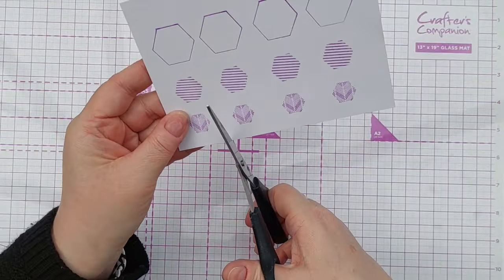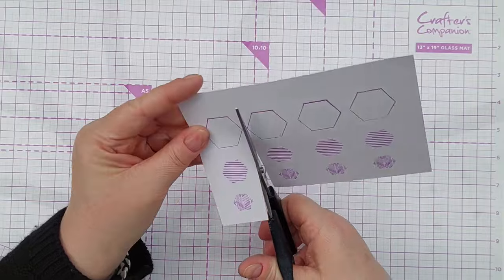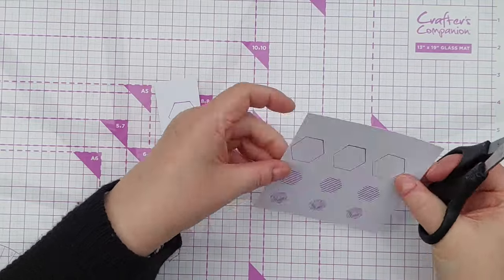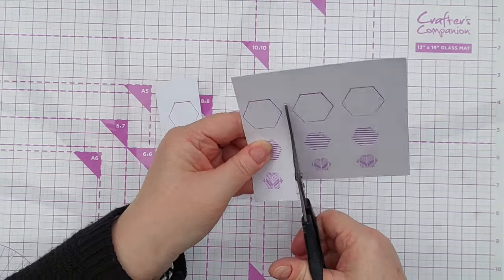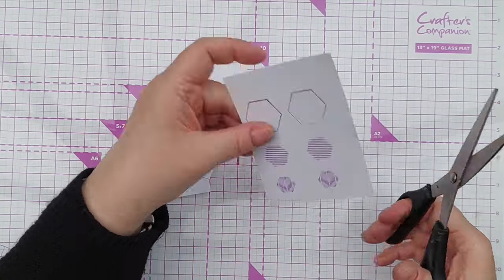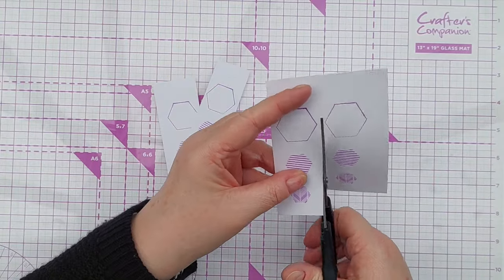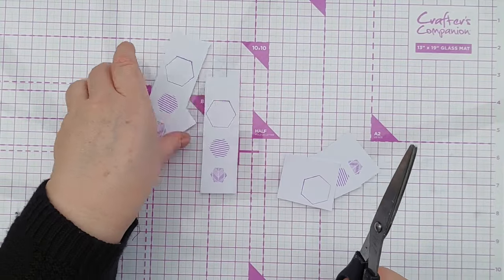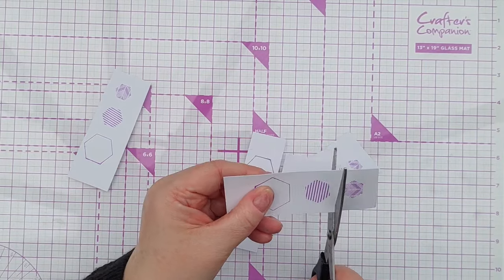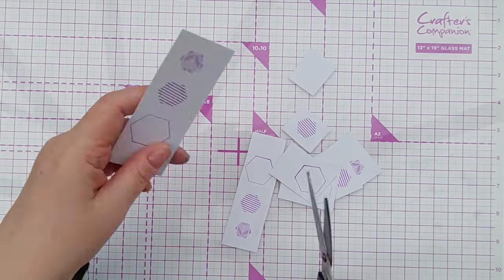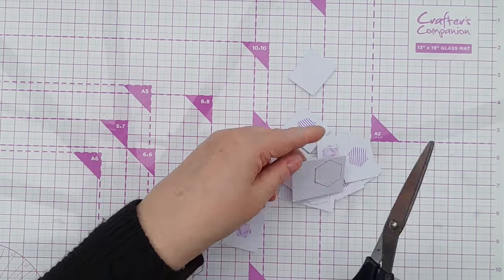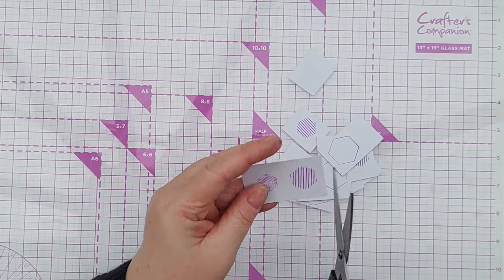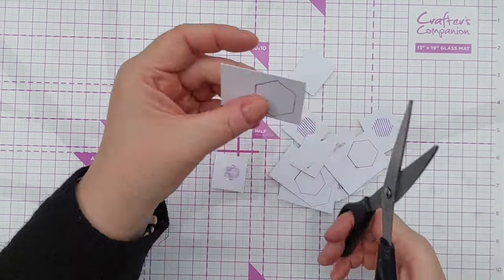If you've got hexagon dies you might find that they fit quite nicely around your stamped images. My hexagon dies don't quite work with these stamps so I'm going to cut them out individually. And I find it's easier to roughly cut them up into individual bits of paper and then cut them out neatly.